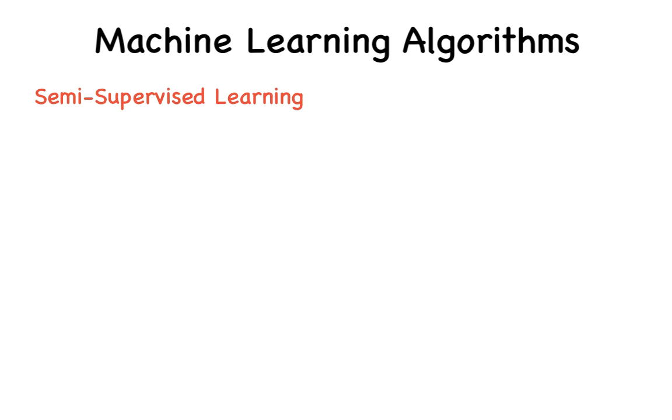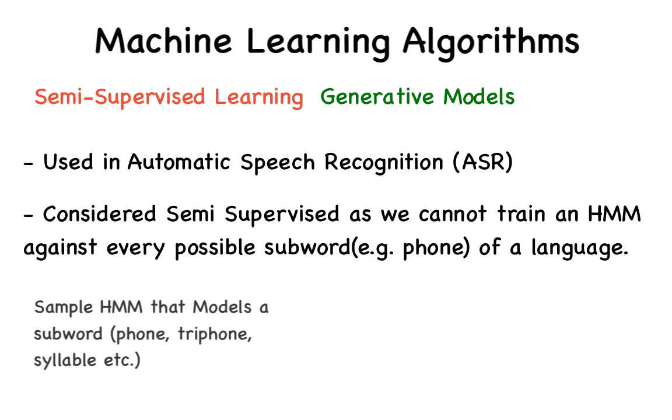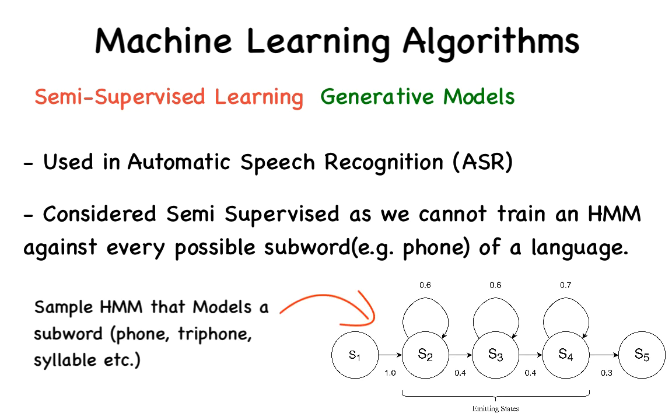The second type of semi-supervised learning is the use of generative models. A generative algorithm models how data was generated in order to categorize a signal. A good example of this would be the use of hidden Markov models in speech recognition. That is, determining the text from an input speech signal.